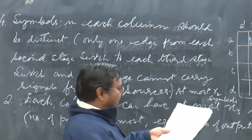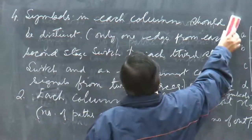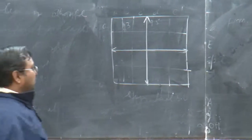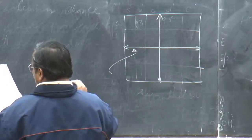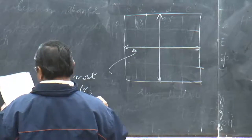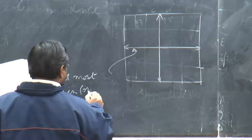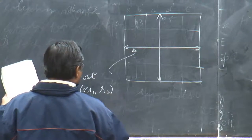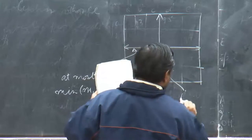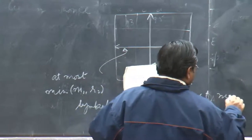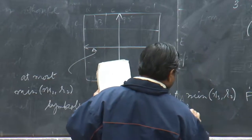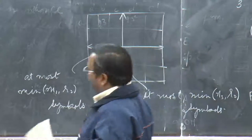As a consequence, in a row you will have at most minimum of M1 and R2 symbols, and in a column at most minimum of M3 and R2 symbols. Now, formally writing down the definitions for a strictly non-blocking switch and a rearrangeably non-blocking switch, I need to define the sets of ports.